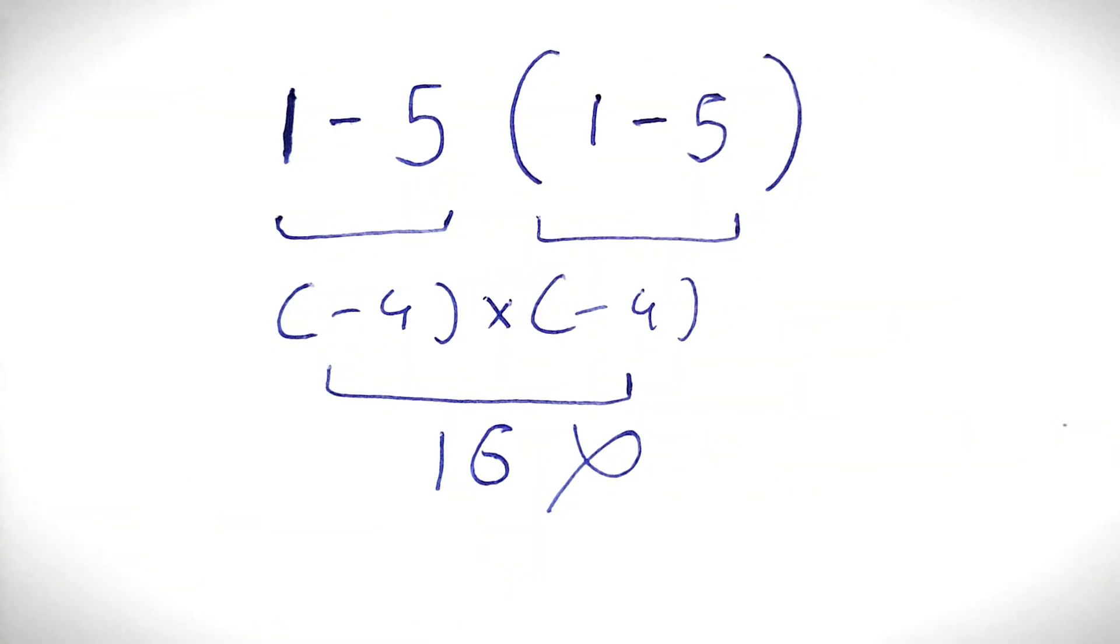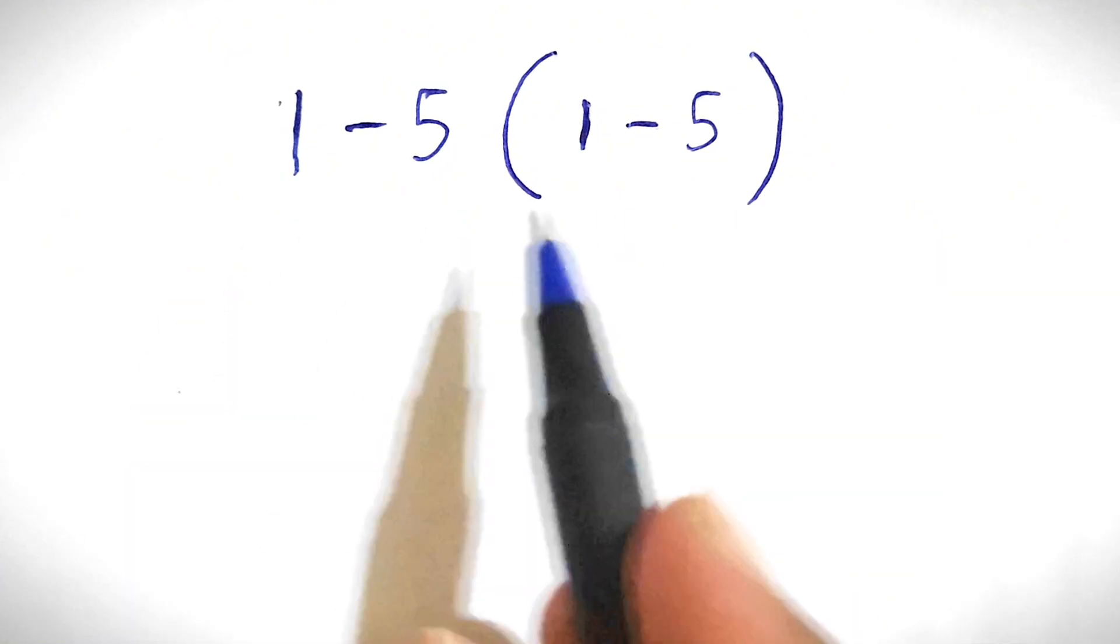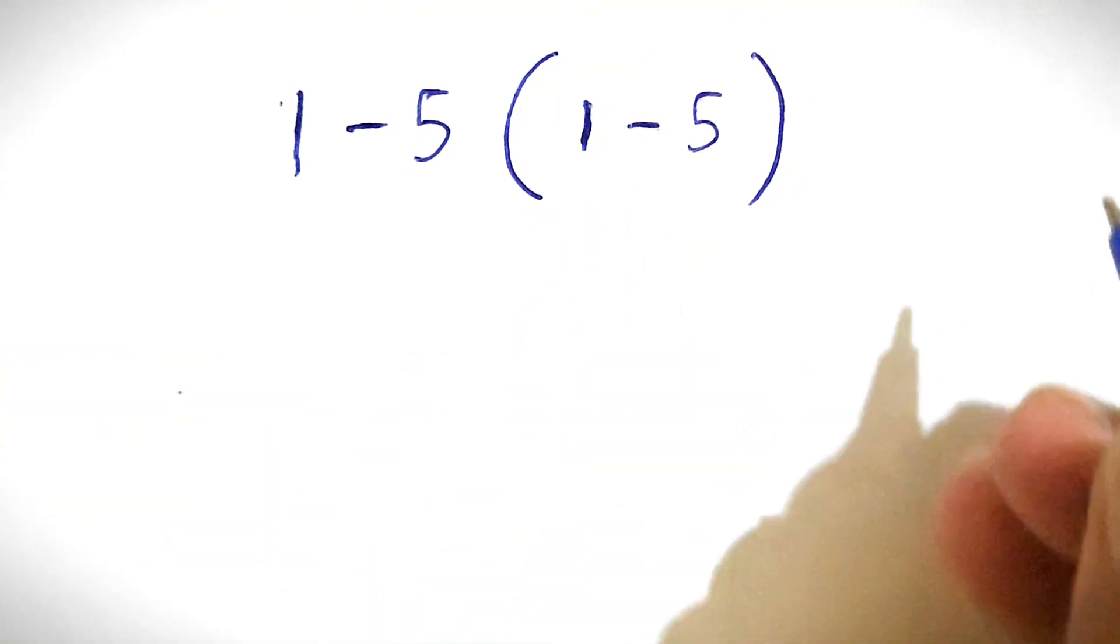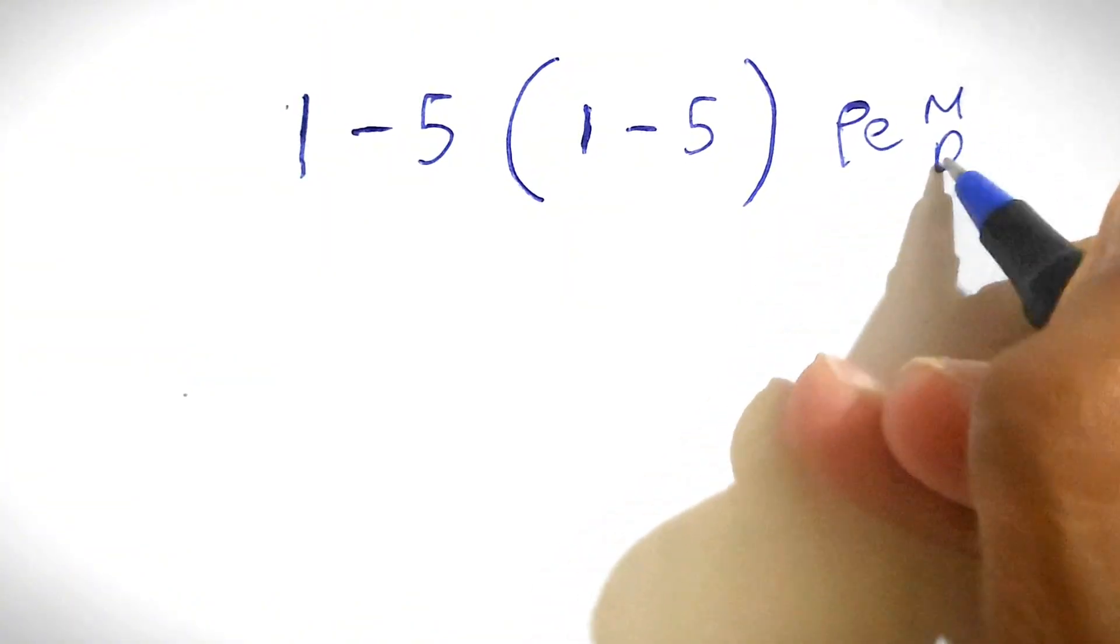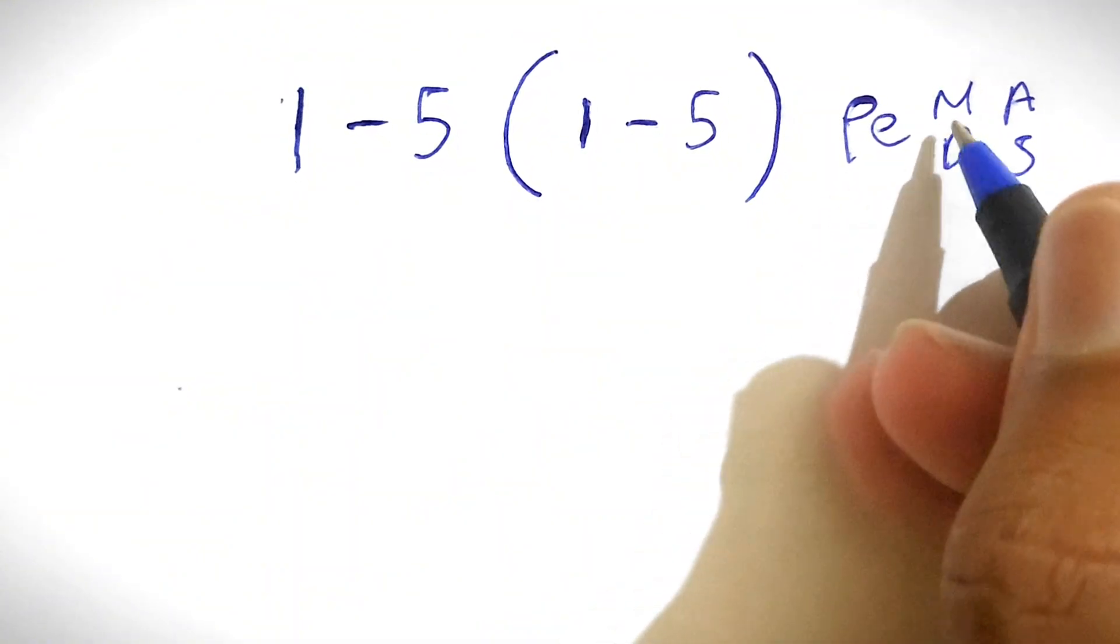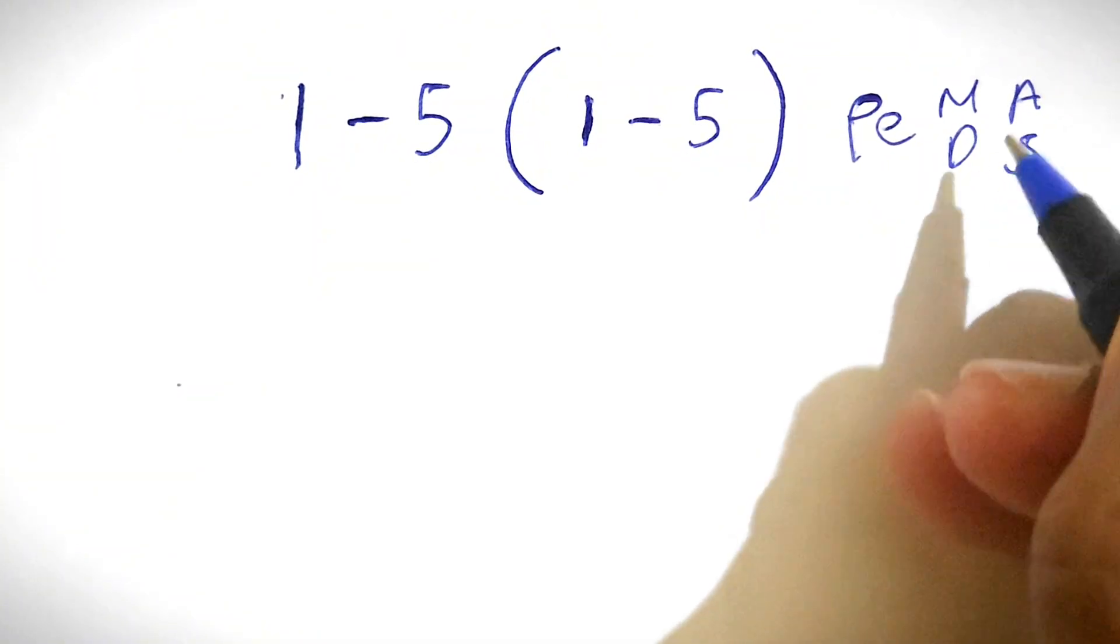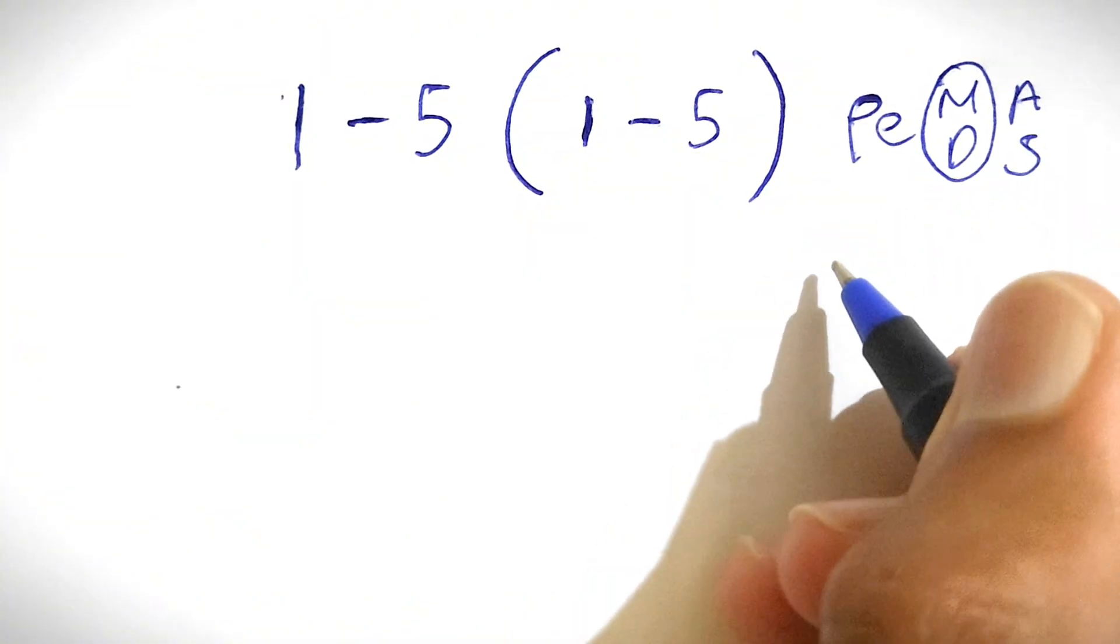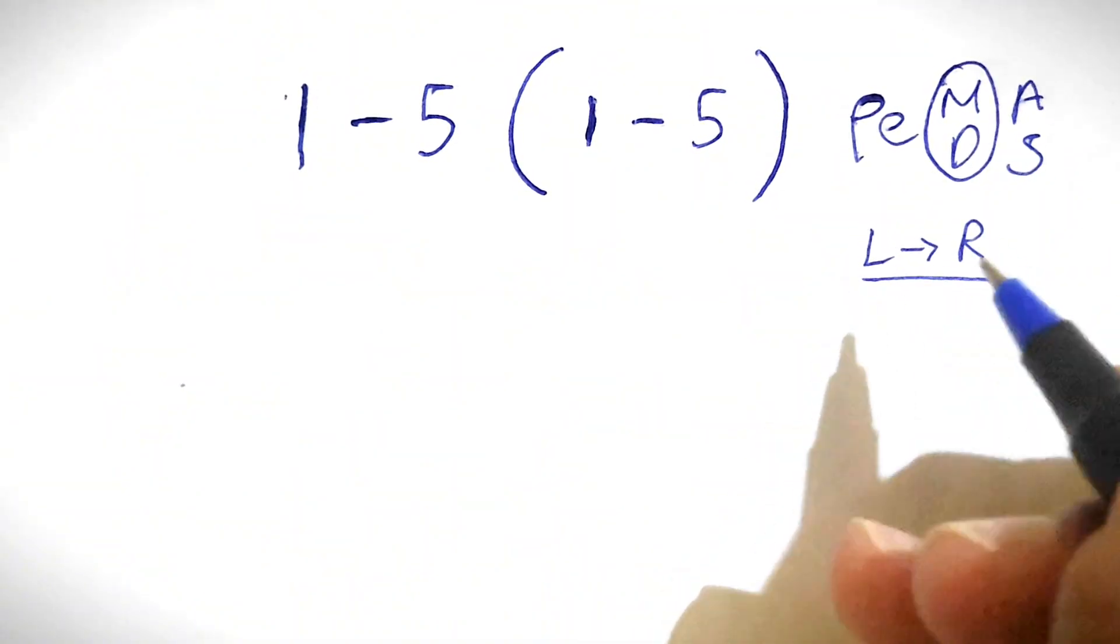To solve this expression properly, we need to follow the order of operations, also called PEMDAS. That's P-E-M-D-A-S, which stands for Parenthesis, Exponents, Multiplication, Division, Addition, and Subtraction. The priority of multiplication and division is the same, but we need to go from left to right, whichever comes first. The same applies for addition and subtraction.